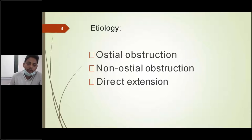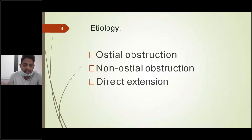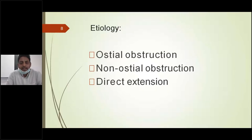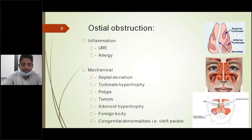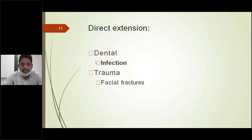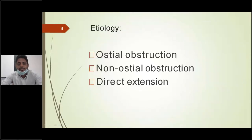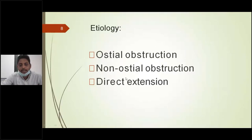Non-ostial obstruction refers to any abnormality in the ciliary function. Direct extension means any infection from the cheek or tooth — trauma or dental infection may lead to direct extension. Under ostial obstruction, any anatomical variations or abnormalities of the nasal or sinus cavities may lead to ostial obstruction. Causes which may obstruct the ostia and lead to rhinosinusitis include inflammation — simple upper respiratory tract infection or allergic rhinitis.